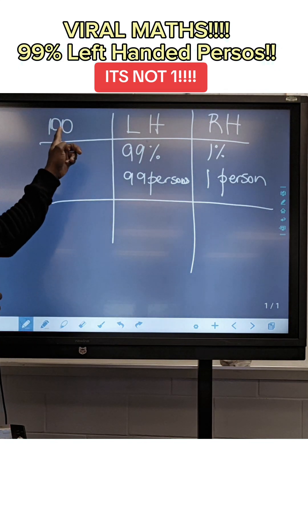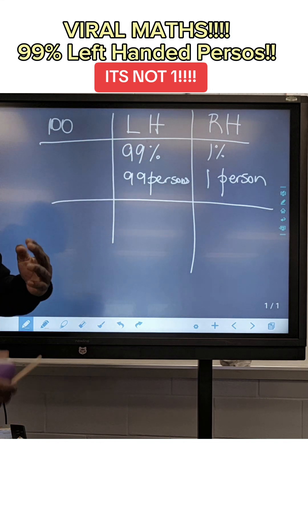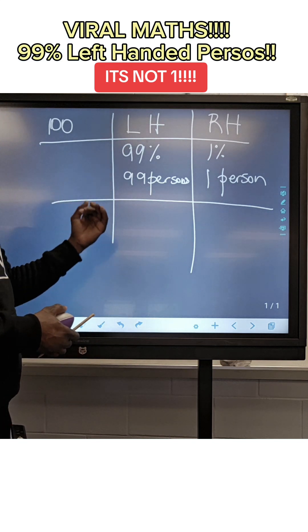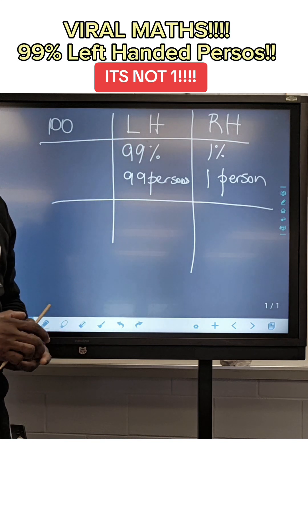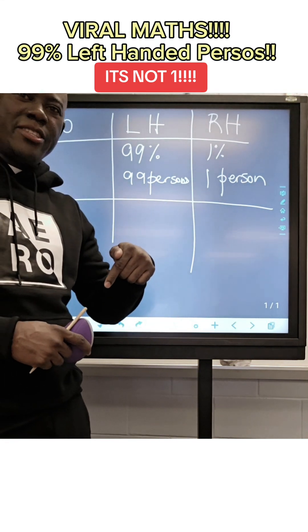The question says that 100 persons are in a room. 99% of them are left-handed, and this would have meant that 1% is right-handed. So the question went further and it says, how many left-handed persons need to leave the room such that we have 98% of left-handed persons left in the room?